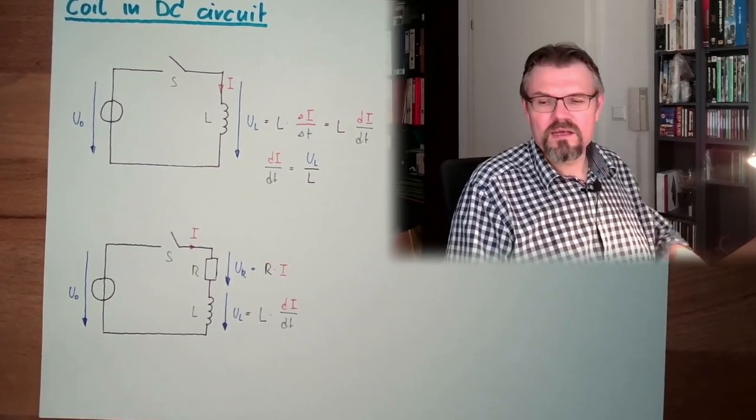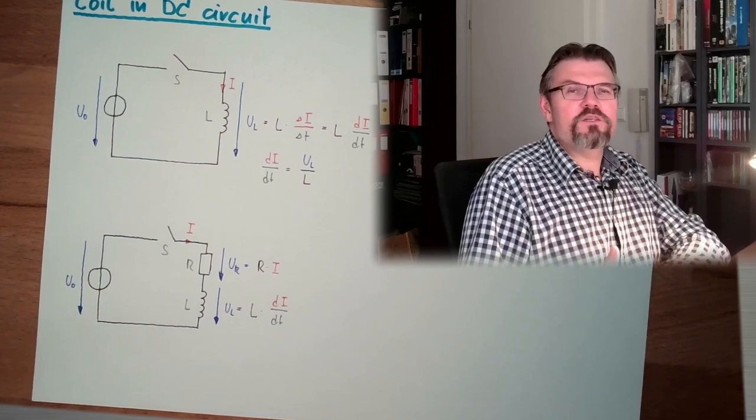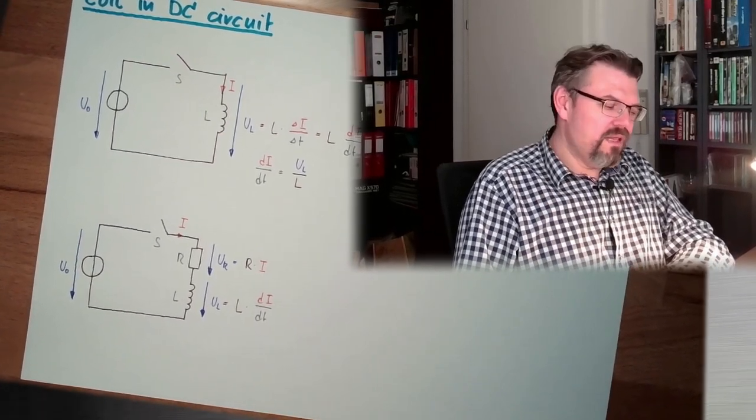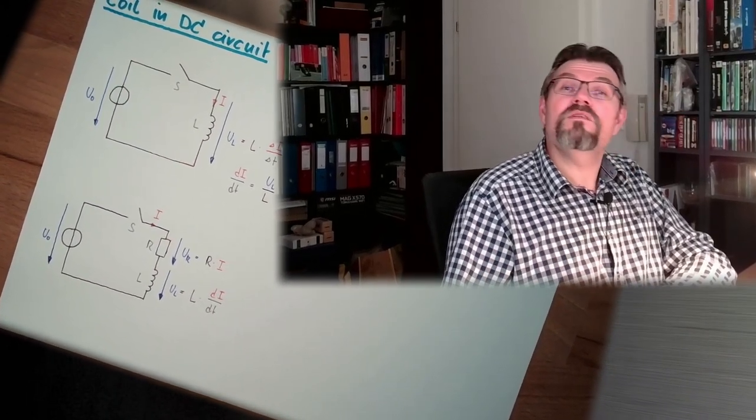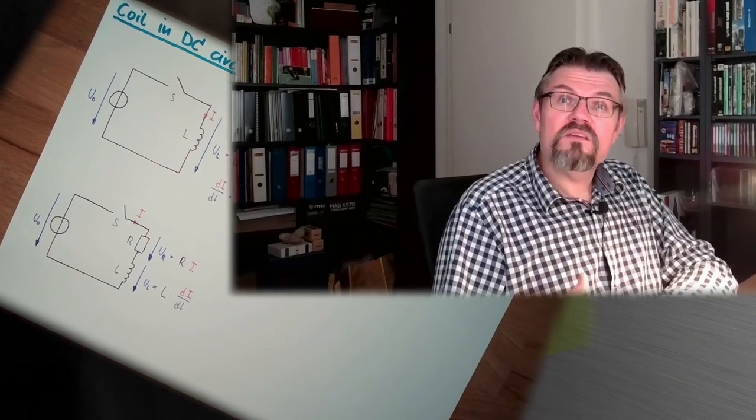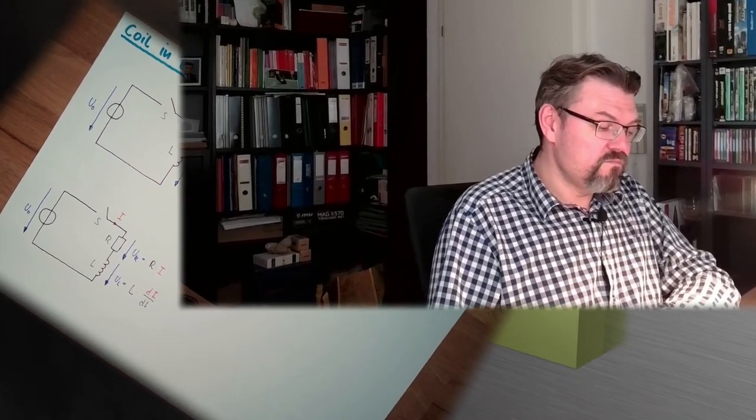Next time we have a look at how these RL combinations are behaving a little bit closer. So there we have a look at how the current is behaving, if we switch on, if we switch off, how the voltage is behaving, if we switch on, if we switch off. And we also know which equations can be used to calculate the transitions between two states. Coil and DC circuits. Next time, a little more in detail. For this time, thank you very much for listening. Goodbye.